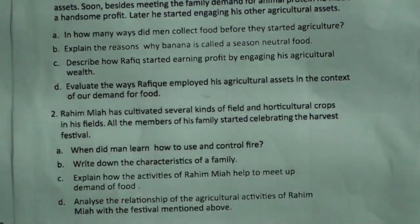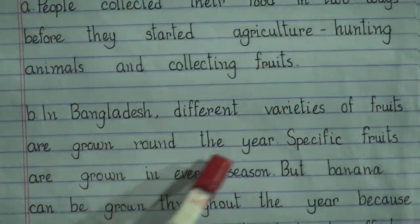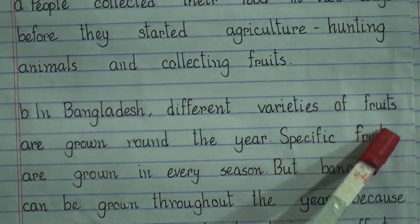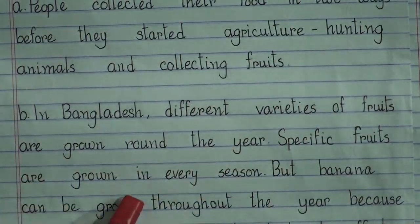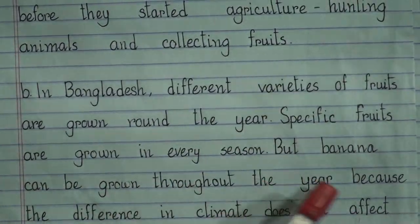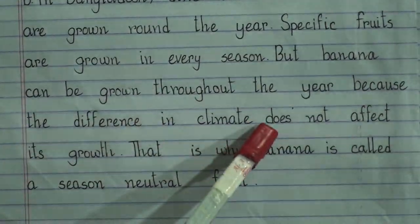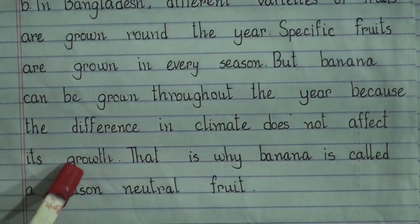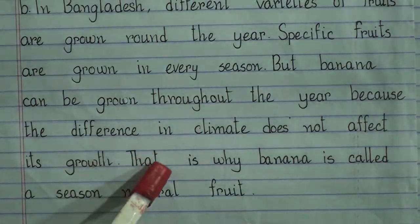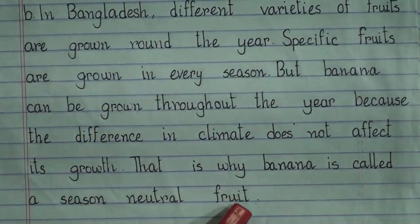Question (b): Explain the reasons why banana is called a season-neutral food. Answer: In Bangladesh, different varieties of fruits are grown around the year, and specific fruits are grown in every season. But banana can be grown throughout the year because the difference in climate does not affect its growth. That is why banana is called a season-neutral fruit.